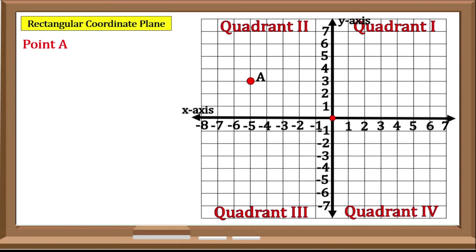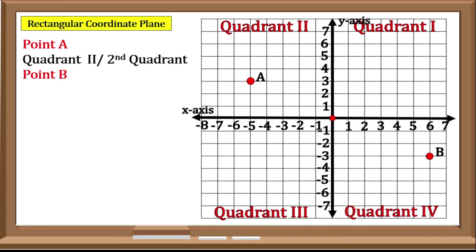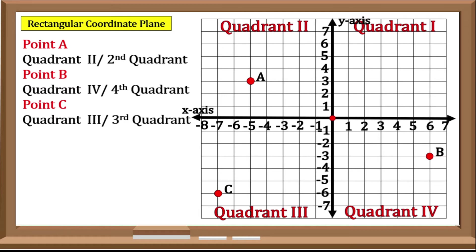We have Point A — this point lies on Quadrant 2 or 2nd Quadrant, so we categorize Point A as in the 2nd Quadrant. We have Point B, which lies on the 4th Quadrant, so Point B is in the 4th Quadrant. Point C is marked here, which lies on the 3rd Quadrant, so Point C is in the 3rd Quadrant. And this is Point D, which lies on the 1st Quadrant — Point D is in the 1st Quadrant.